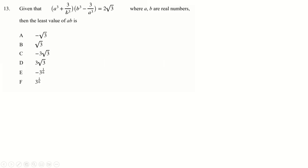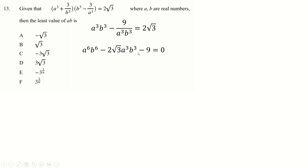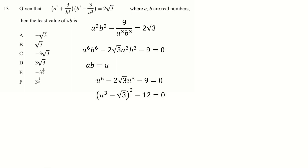Good question this one. You just need to be brave enough to expand it out — the middle terms disappear because of the plus-minus symmetry. Multiply everything by a³b³, then make a substitution. Solve the resulting quadratic by completing the square or the formula. Root 12 is 2√3, so solutions are 3 + 2√3 = 3√3... actually 3 + 2√3 and minus √3.